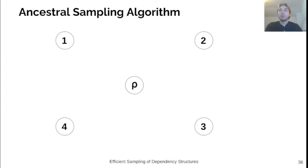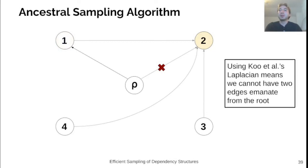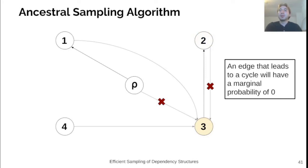We once again look at an example. We first sample an incoming edge to node 1. We then proceed to sample the incoming edge for the next node. In this case, as we are using Coo et al.'s Laplacian, the edge from root to node 2 will have zero probability, and so we will never choose it.